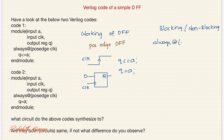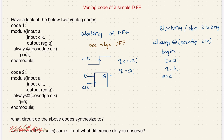Always at the positive edge of clock, begin: b = a and q = b, end. I'm not writing an entire module — just assume an always block. Here I am using a blocking statement. What does blocking statement mean? It executes step by step — in other words, it executes sequentially; parallel execution won't happen.